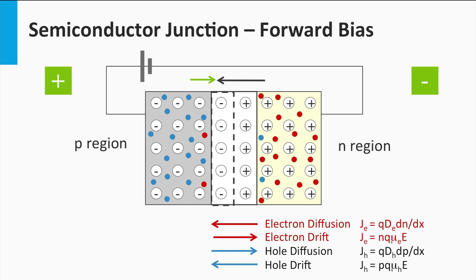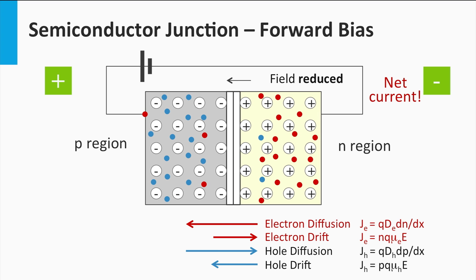The effective electric field across the depletion zone is the sum of the built-in field and the applied electric field, and becomes smaller as a result of the forward bias. As a consequence, the width of the depletion zone is affected — it becomes much narrower. This means that diffusion becomes more dominant than drift, as you can see by looking in more detail at the equations for the current densities related to diffusion and drift.